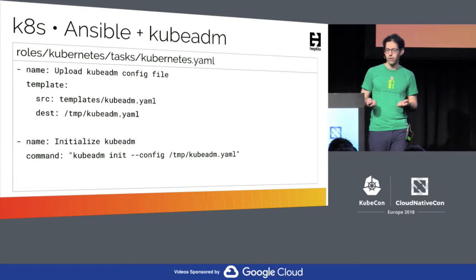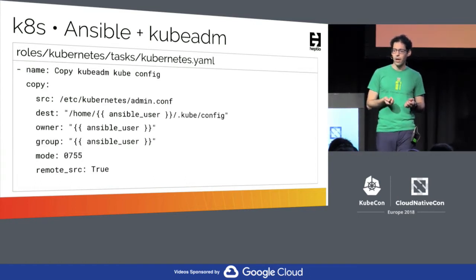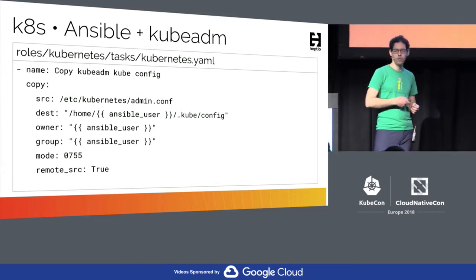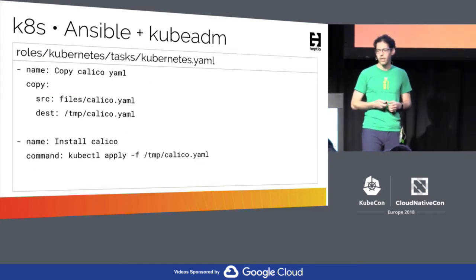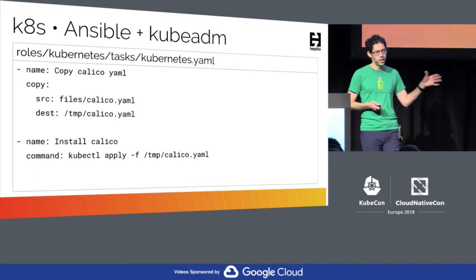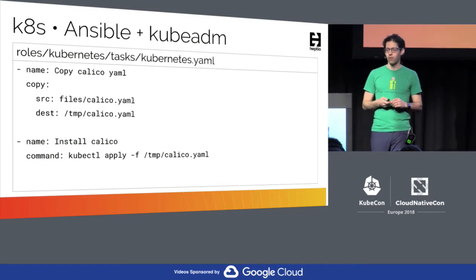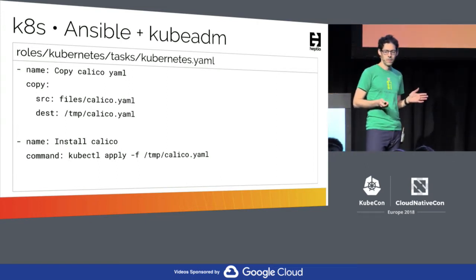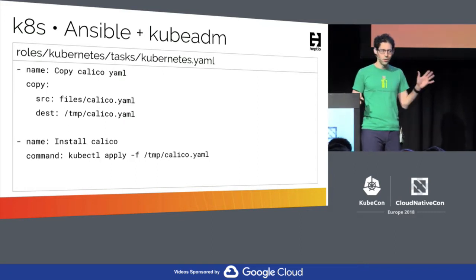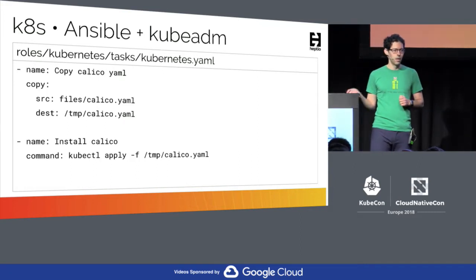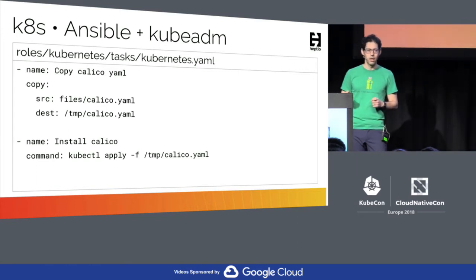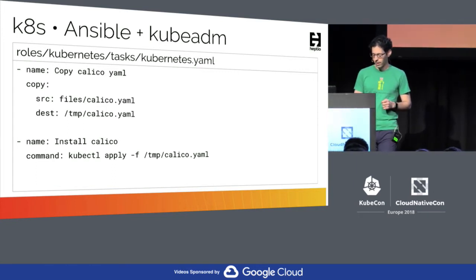But we don't have Calico installed yet. So we go ahead and copy the kubeconfig file that kubeadm creates to the home directory of my remote user. Then I go ahead and take the Calico YAML, copy it over to the remote server, and run kubectl apply on it. When this is done, I have a fully functioning one-node cluster. I left out a few things, but all of this source code is available on my GitHub repository with a link at the end.